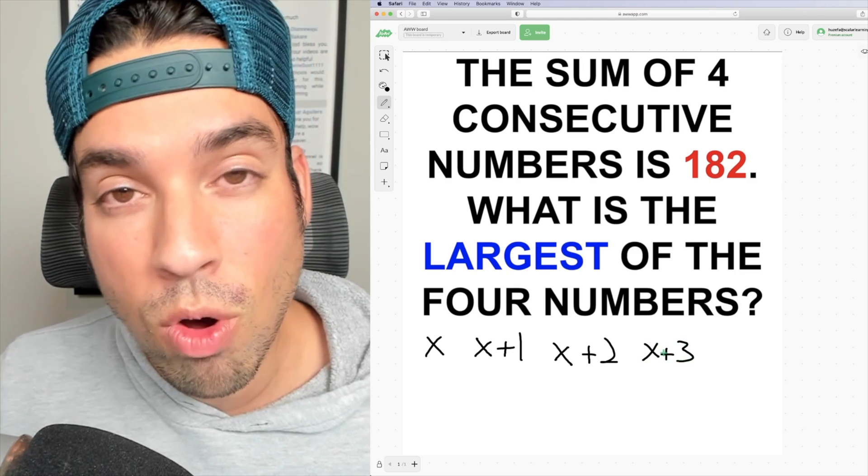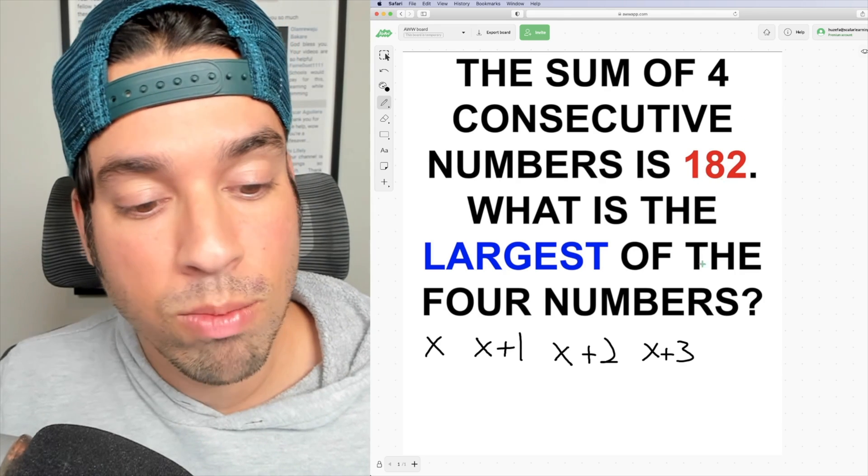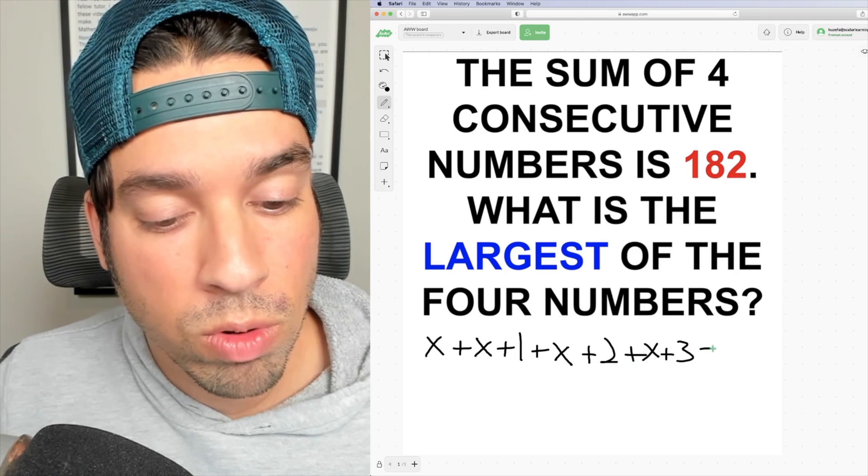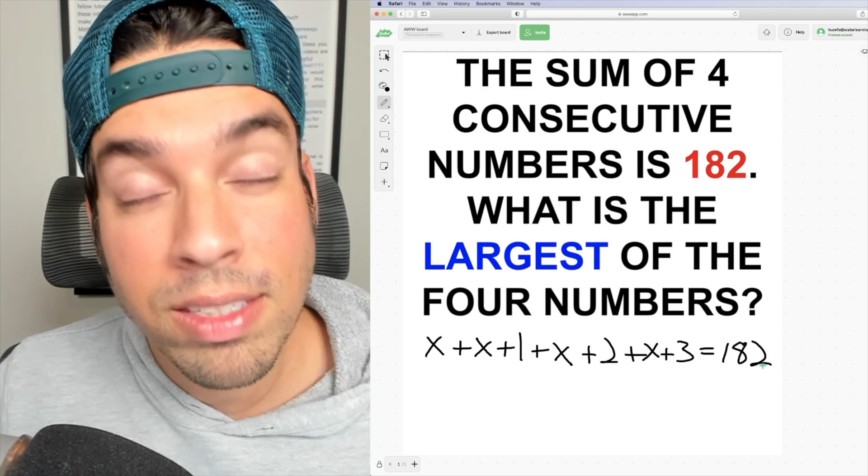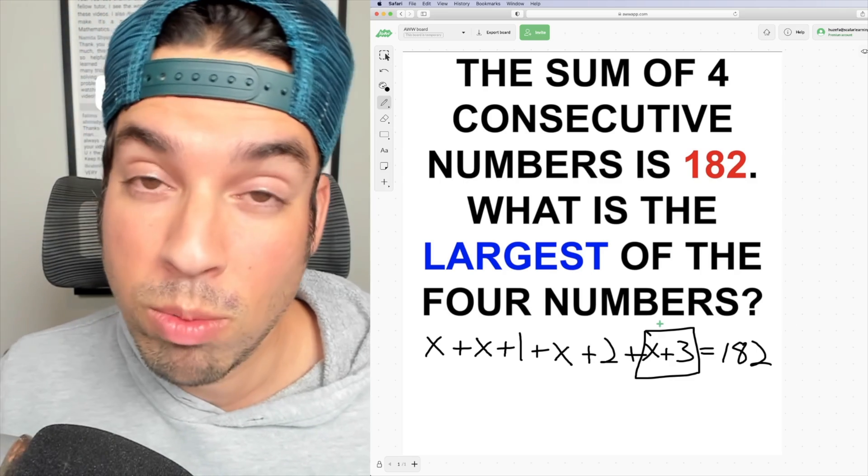So this is a really nice representation of all four numbers. Now let's map this out in terms of the sum, which is 182, which means if I were to add all of these up, it would equal 182. Last thing to remember is we're solving for the largest number, which will be X+3, but we'll get back to that.